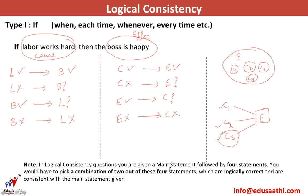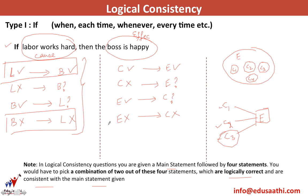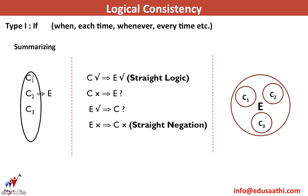In logical consistency questions, you are given a main statement followed by four statements. You have to pick a combination of two out of these four statements which are logically correct and consistent with the main statement. The first and last statements are the ones we pick. Summarizing: many causes, one effect for the 'if/when/each time/whenever/every time' type. A cause taking place means the effect takes place — this is called straight logic. The cause not taking place means we don't know about the effect. The effect taking place means we don't know which cause. But if the effect does not take place, the cause definitely did not take place — this is called straight negation.